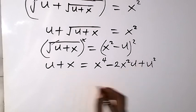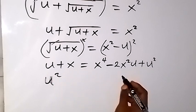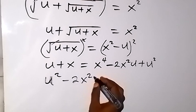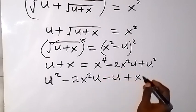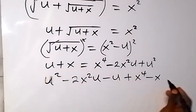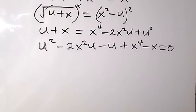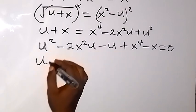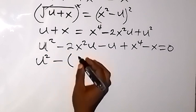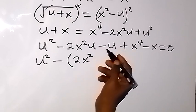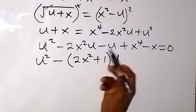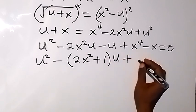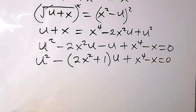Let's rearrange to form an equation in terms of u. Writing in order: u squared, minus 2x squared u, minus u, plus x raised to power 4, minus x equals zero. We factor: u times (u minus 2x squared minus 1) plus (x raised to power 4 minus x) equals zero. This is a quadratic equation in u.